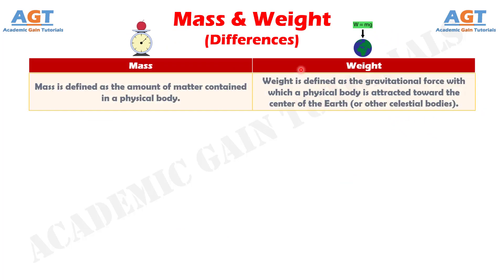Difference number 1: Mass is defined as the amount of matter contained in a physical body, whereas weight is defined as the gravitational force with which a physical body is attracted toward the center of the Earth.